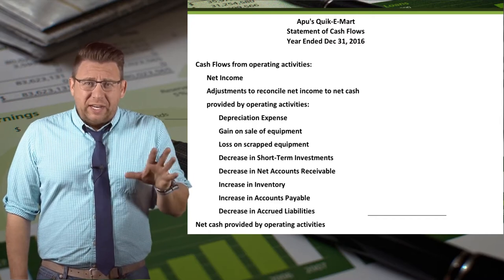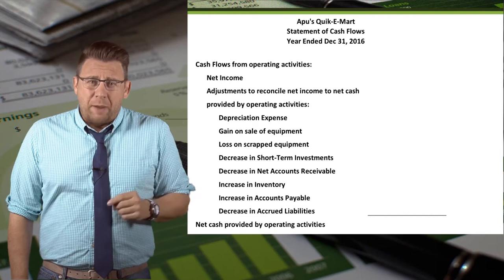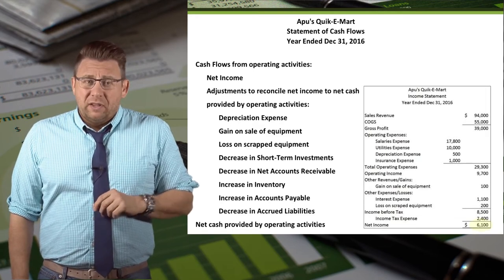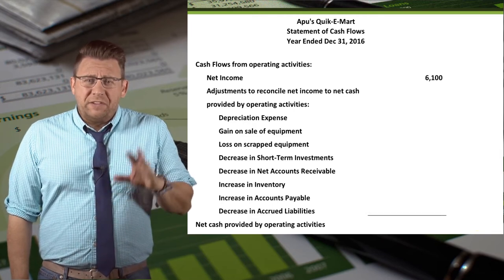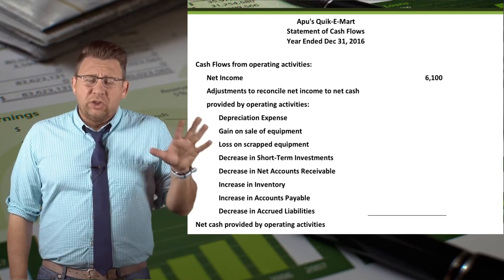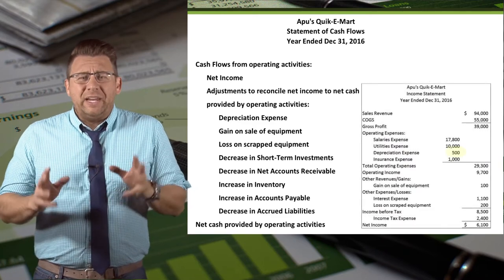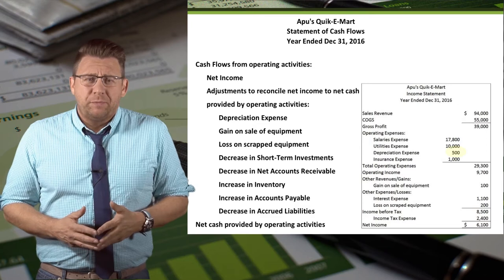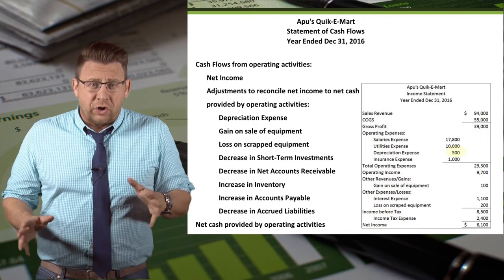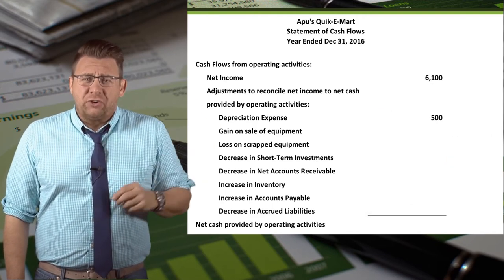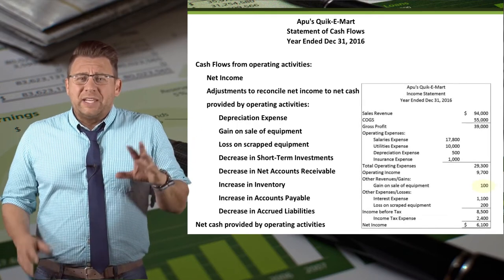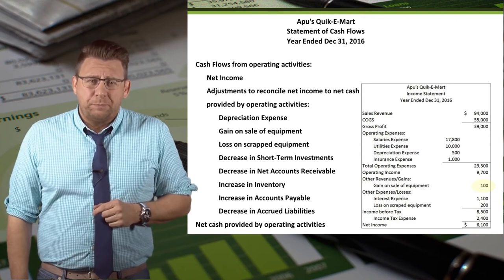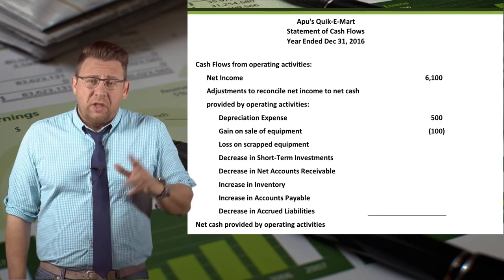Now let's plug in the numbers for Apu's Quickie Mart. The first item is net income from the income statement, which is $6,100. If the company had a net loss instead, we would just start with a negative number. Next, we add back non-cash items: the Quickie Mart has $500 of depreciation expense and no other non-cash expenses, so we add $500 in the Adjustments section. For gains and losses, since gains are added to net income, we subtract a gain of $100 in the Adjustments section to cancel it out.